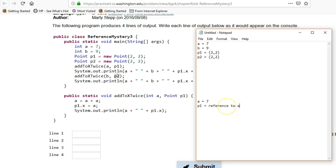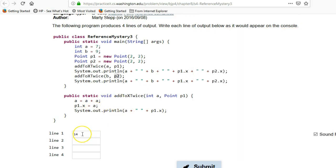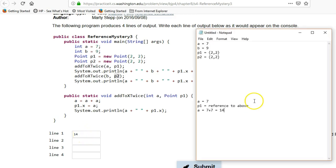So to above. Alright, so now when a equals a plus a, that means a equals 7 plus 7, and that's gonna be 14. So when it prints out here a, that's gonna be 14. And then p1.x equals a, well that's actually gonna affect this up here.